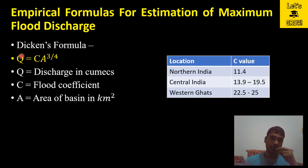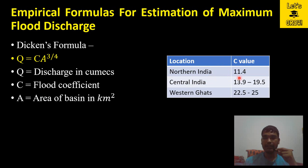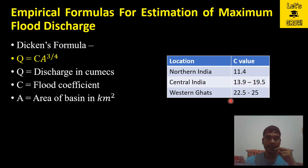For the value of C, the flood coefficient, for different locations: if you are using this formula for the northern part of India, the value of C is 11.4; for central India its value is 13.9 to 19.5; and for the Western Ghats the value of C ranges from 22.5 to 25.